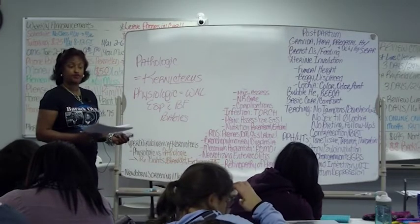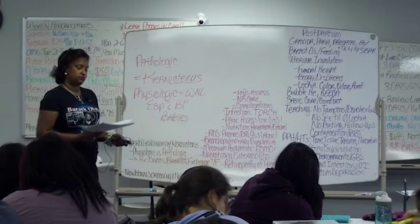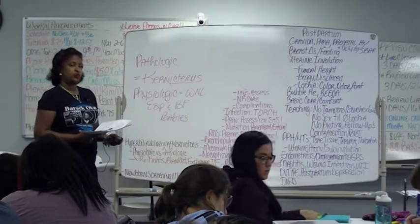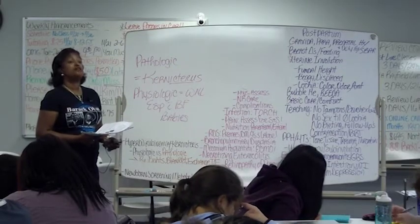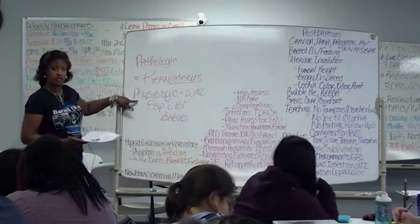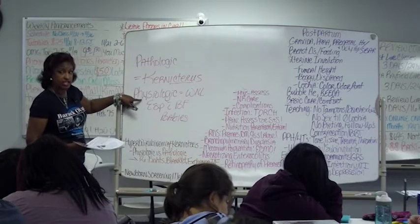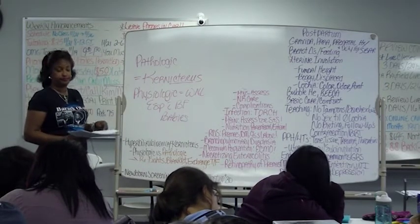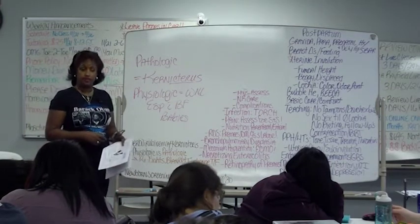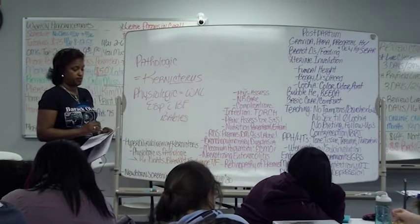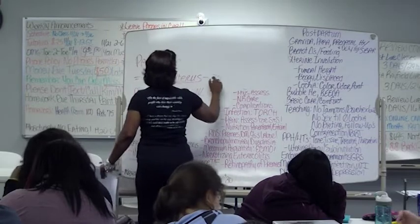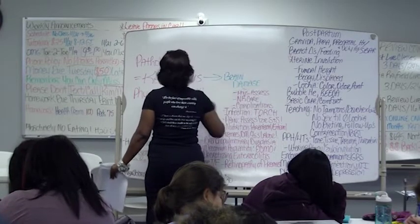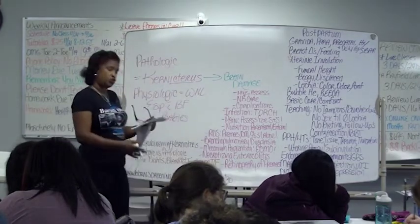The number one reason for high bilirubin is ABO incompatibility. While under the billy lights, we push fluids and encourage more and more breastfeeding. We teach mommy, even with a baby that has physiologic or normal jaundice, to call us if the jaundice gets worse after day three. ABO incompatibility is one in five babies — very common. Kernicterus, or extremely high bilirubin, leads to brain damage and mental retardation.